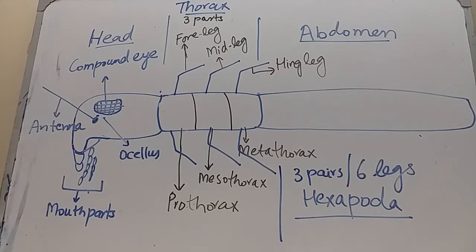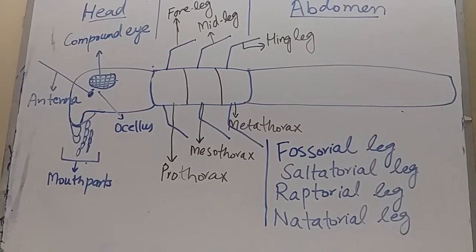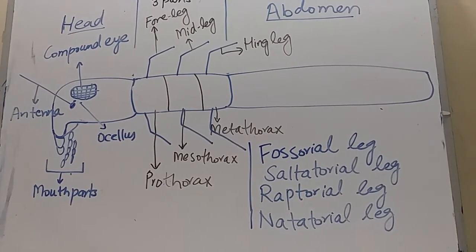The first pair of legs is the foreleg, the second is the mid leg, and the third is the hind leg. Legs are basically used for walking or running, but there are different modifications: fossorial legs for digging found in mole crickets, saltatorial legs for jumping found in grasshoppers and crickets, raptorial legs for grasping prey found in mantids, and natatorial legs for swimming found in water beetles and water bugs.